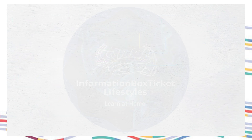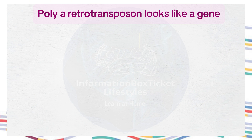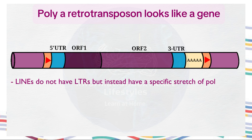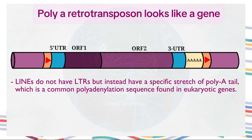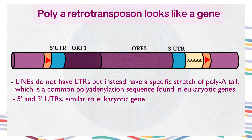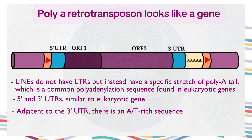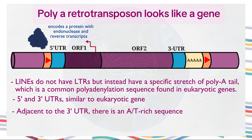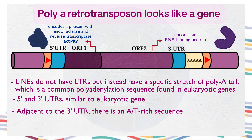Now let's examine the structure of a LINE, or poly-A retrotransposon, in more detail. Unlike LTR retrotransposons, LINEs do not have LTRs, but instead have a specific stretch of poly-A tail, which is a common polyadenylation sequence found in eukaryotic genes. They also have 5' and 3' UTRs. Adjacent to the 3' UTR, there is an A/T-rich sequence, which plays an important role in their function. The ORF1 and ORF2 regions encode several proteins: ORF1 encodes an RNA-binding protein, while ORF2 encodes a protein with endonuclease and reverse transcriptase activity. These proteins are essential for the function of LINE retrotransposons.